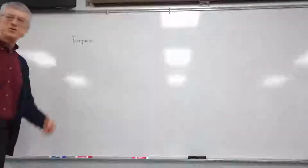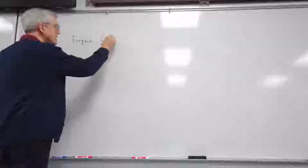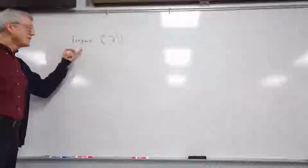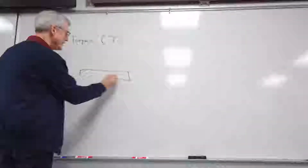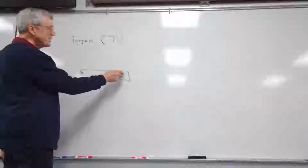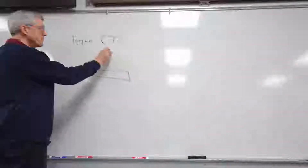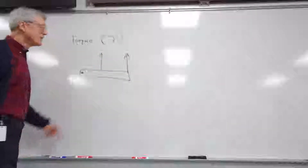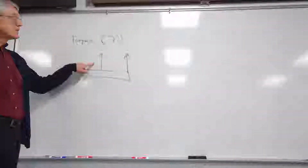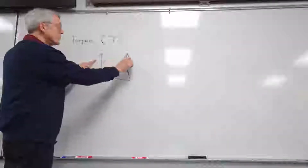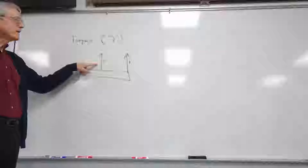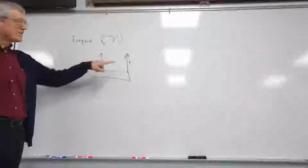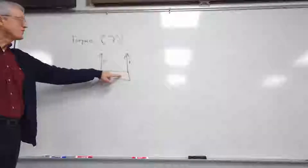Torque. Here's a very quick review of what we have learned in the last two days. Torque is symbolized by the Greek letter tau, and it means a force that tends to make something rotate. If this is a meter stick and there's a pivot point here, it can rotate this way if you apply a force here, or that way if you apply a force there. Steve, which one of these forces — they're both force F, same number of newtons — which one would create more torque? This one — correct — because it's farther from the pivot point.